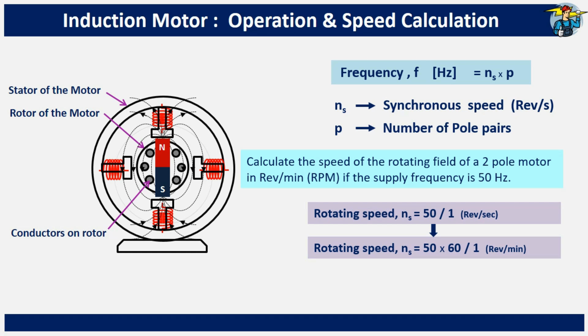Additionally, to convert revolutions per second to revolutions per minute, that is RPM, multiply by 60. This shows that this motor has a rotating magnetic field speed of 3000 RPM.